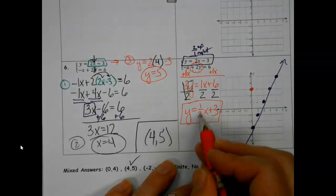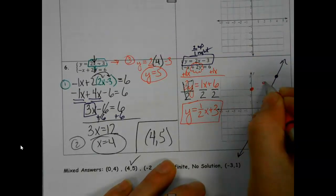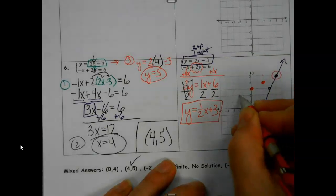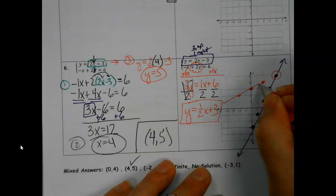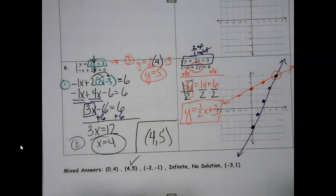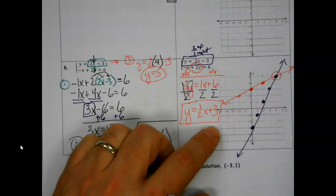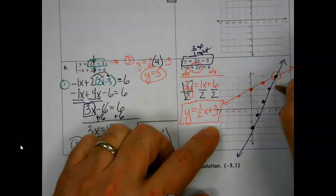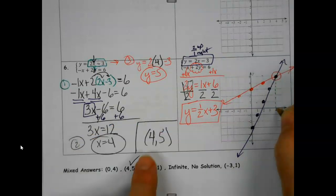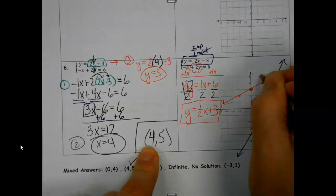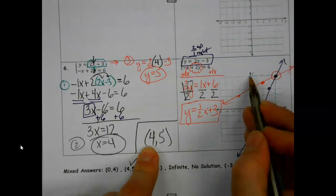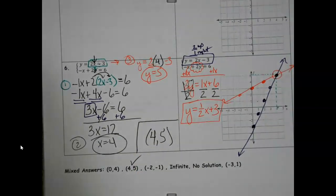So again, my slope, I'm going up one right two. There is my magic value. And where is it at? Let's see. If I follow it back down to the x axis, four. If I follow it over to the y axis, five. Same thing. Bingo. And we're ready to roll.